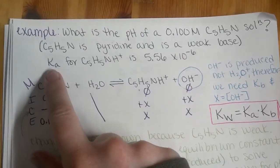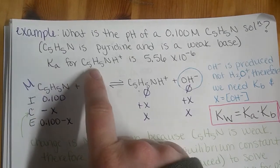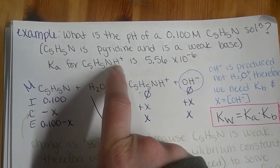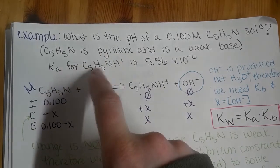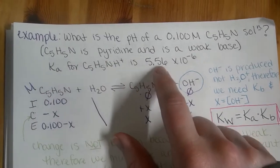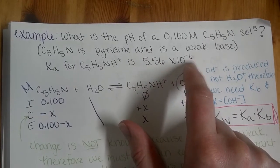Now Ka would also be given for C5H5NH+, so this is the conjugate acid of pyridine, and we're given that value is 5.56 times 10 to the negative 6.